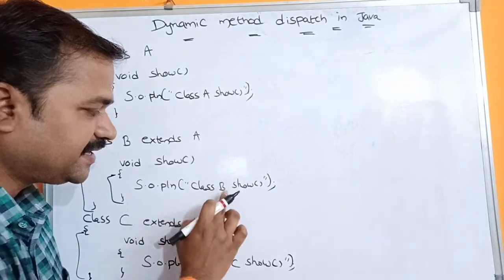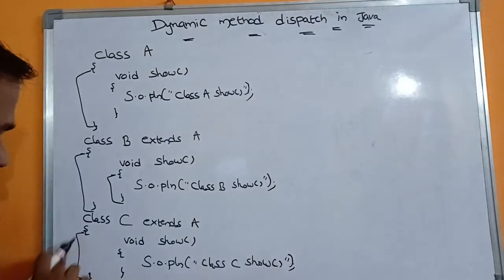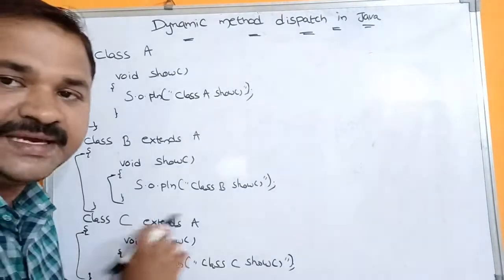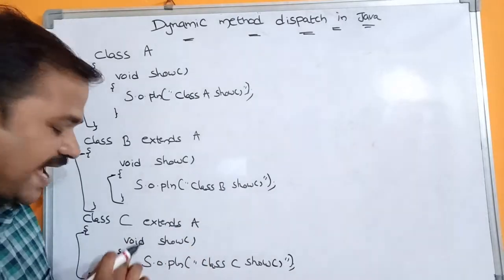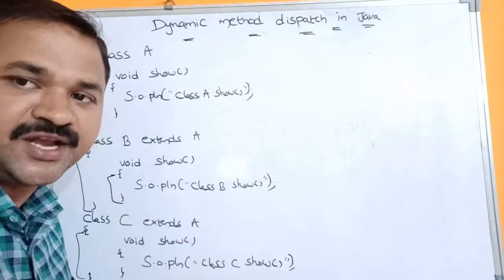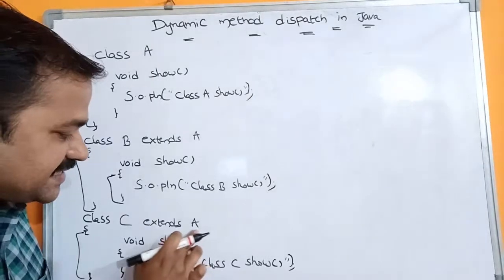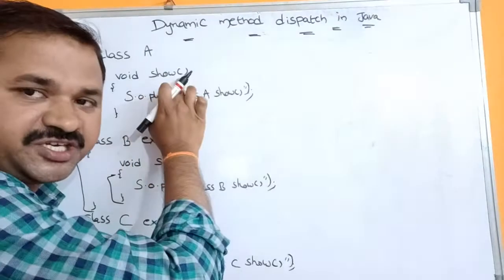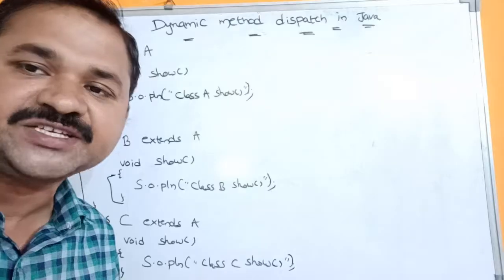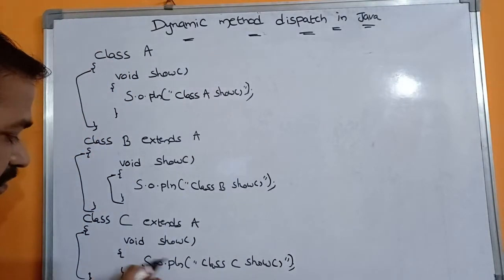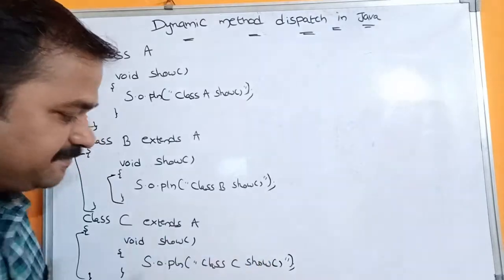Class B's show method body is System.out.println("Class B show method"). Similarly, class C is created by inheriting from the base class. Class C is also not satisfied with class A's show method definition, so it provides its own definition with body System.out.println("Class C show method").